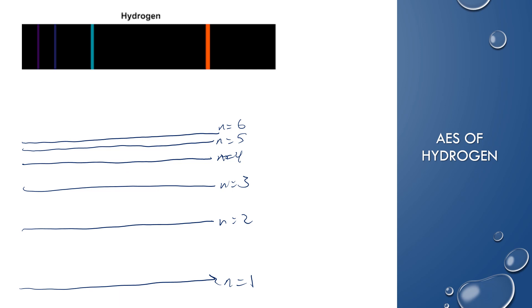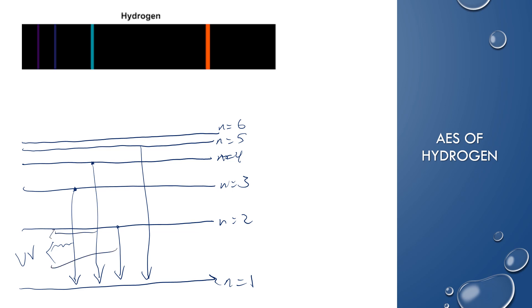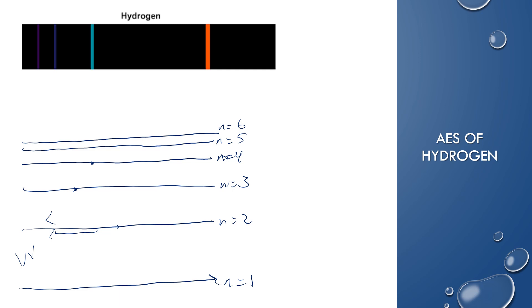If you have an electron in the third energy level and it jumps down to the first energy level, that will emit UV radiation — not visible light. Really, anything jumping back down to the first energy level is going to release a lot of energy, producing high-energy photons in the UV range. Where you get these four colors in the visible range is when the electrons fall back down to the second energy level.